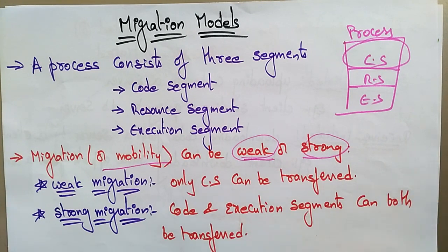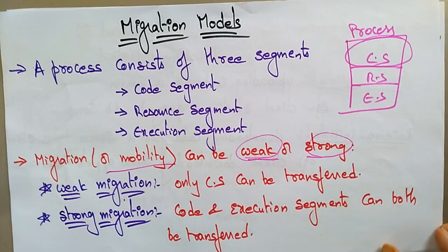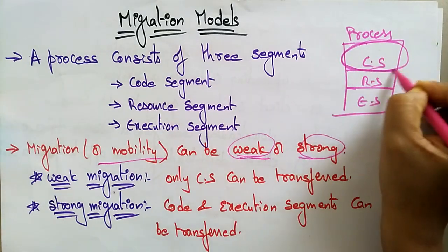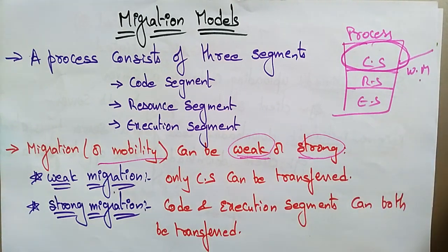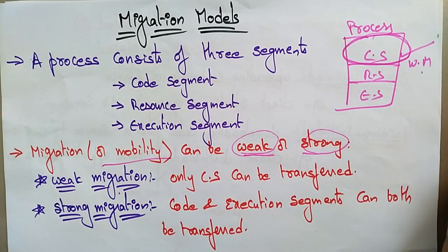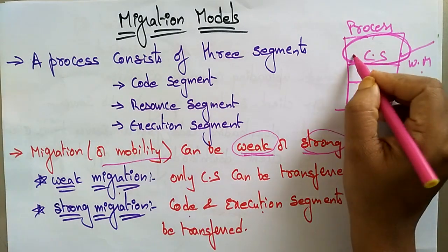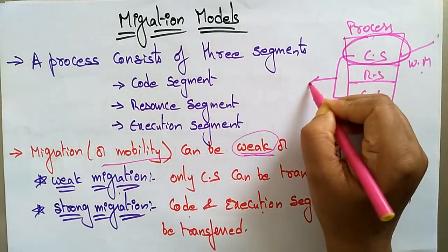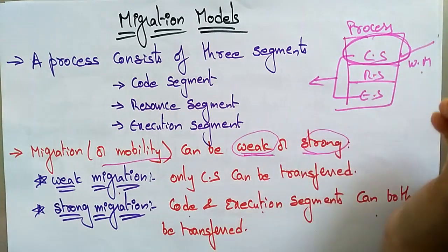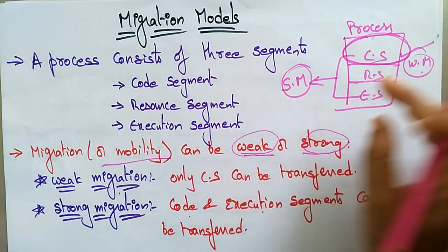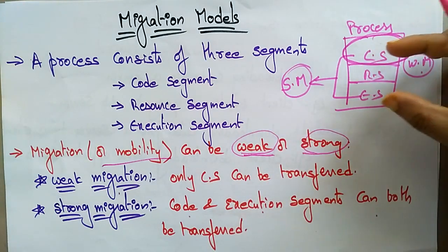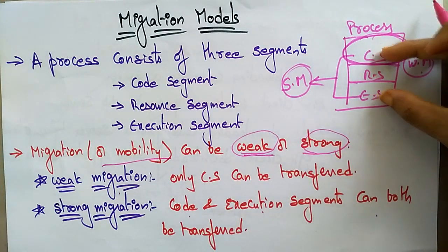Weak migration means only the code segment is transferred — if only the code segment is transferred, you call it weak migration. Strong migration means both the code and execution segments are transferred. When you transfer the code as well as the execution part, you call it strong migration.